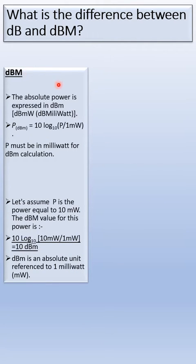dBm is the absolute power expressed in dBm (dB milliwatt). P_dBm = 10 log₁₀(P/1mW), where P is the power which must be in milliwatts for dBm calculation.